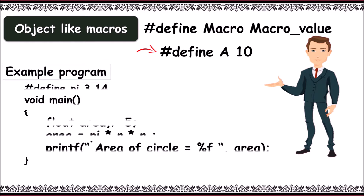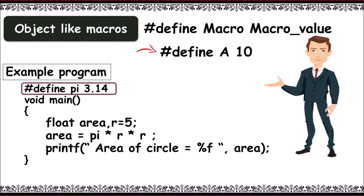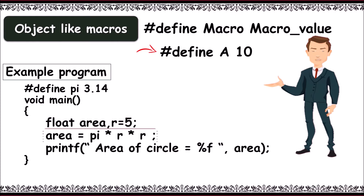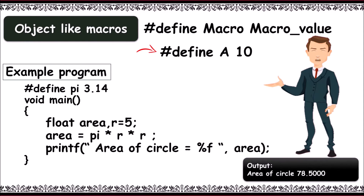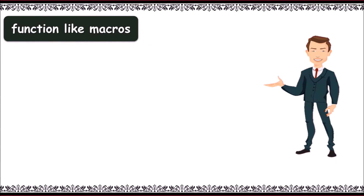Example program: #define PI 3.14 allocates 3.14 to PI. Then float area, r = 5. Next, area = PI * r * r. Here PI is substituted with 3.14 and the expression is evaluated. printf prints the output: area of a circle is 78.500.